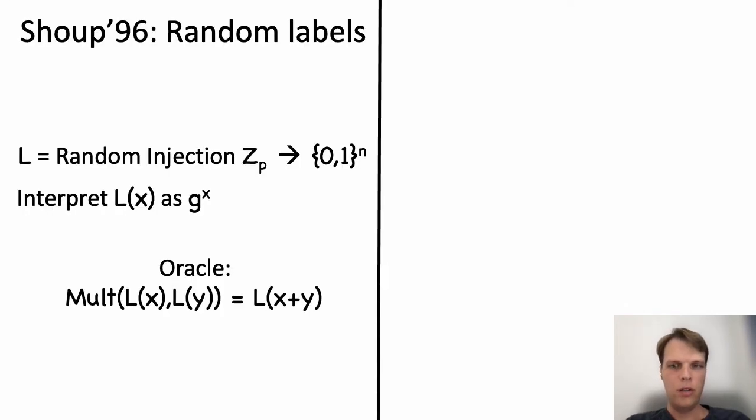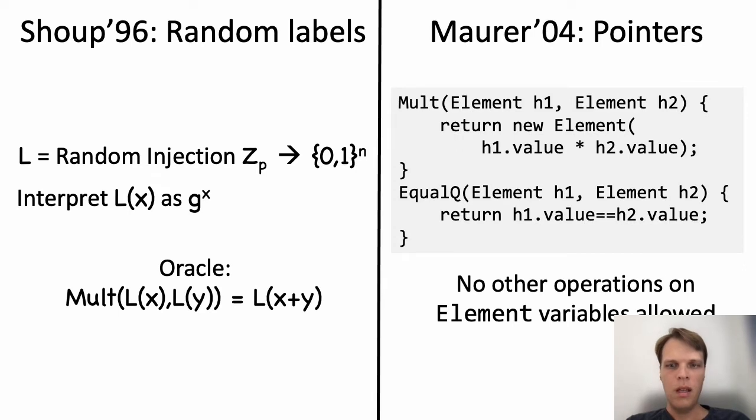The literature contains two generic group models. The first, on the left, is Shoup's model, which uses random labels to represent group elements. The second generic group model is Maurer's model, which uses handles. I like to think of Maurer's model as imposing a strong type system, dictating that the only way an algorithm can manipulate a group element is by group multiplication and testing equality. No other operations are allowed.